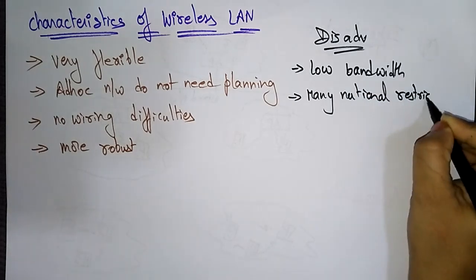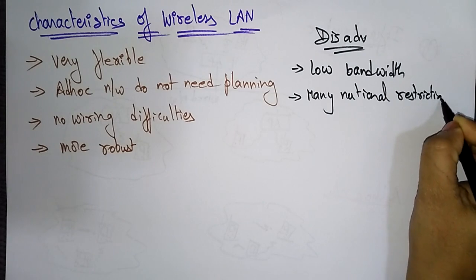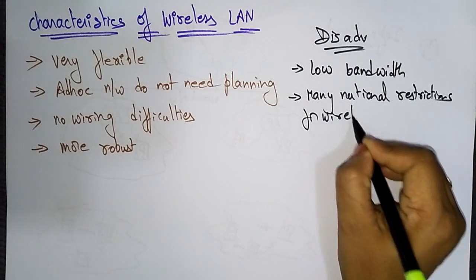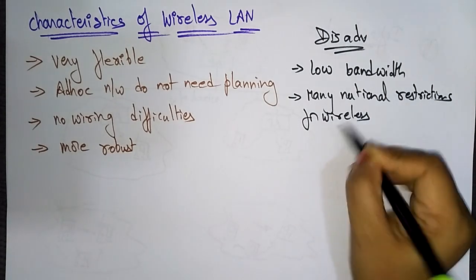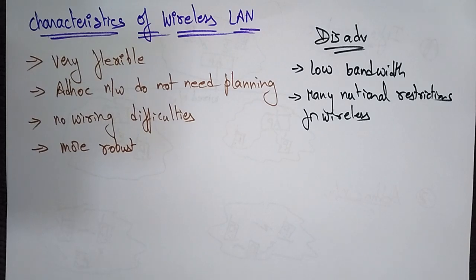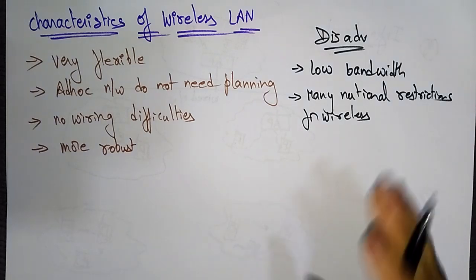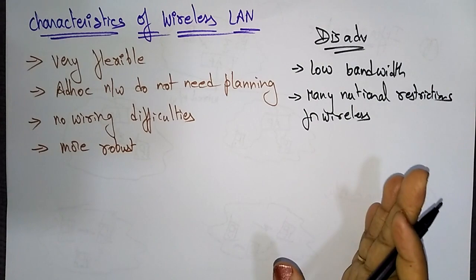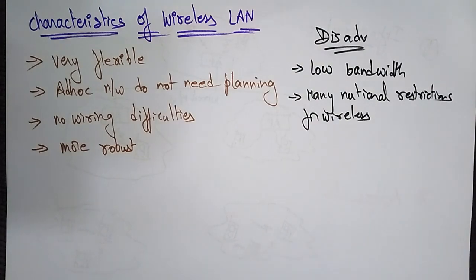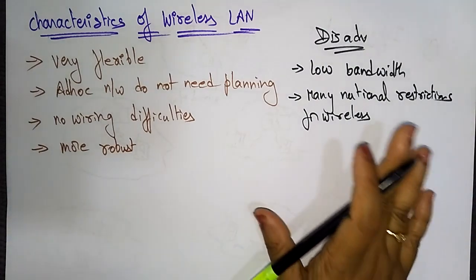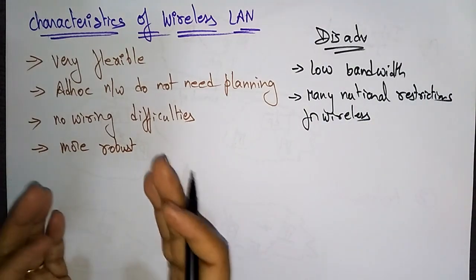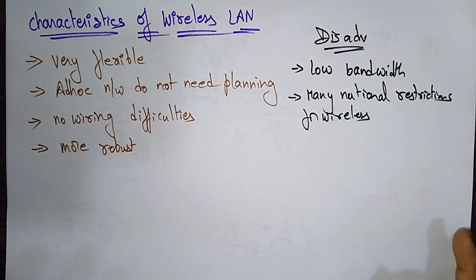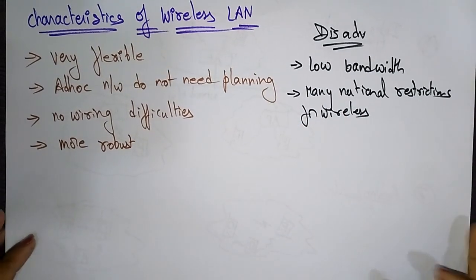A long time is needed to establish a global environment and global solutions for wireless. So many national restrictions and the time required to establish global solutions are key disadvantages. These are the characteristics — both advantages and disadvantages — of the wireless local area network.